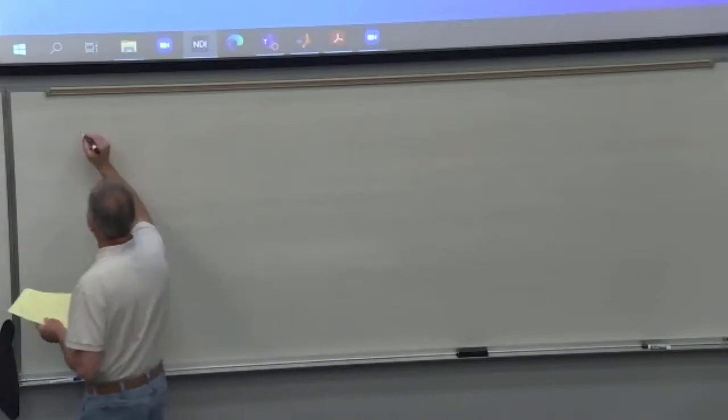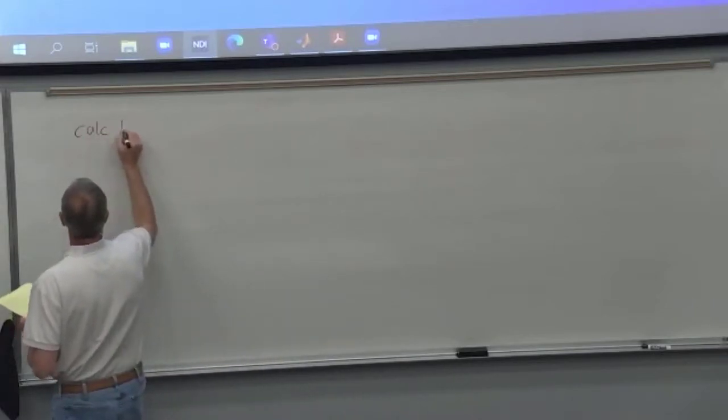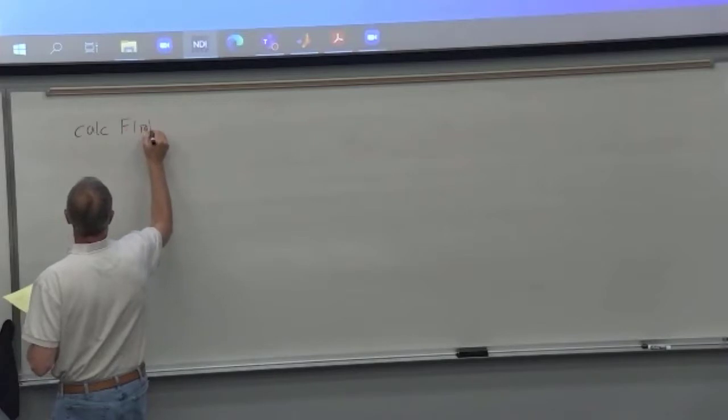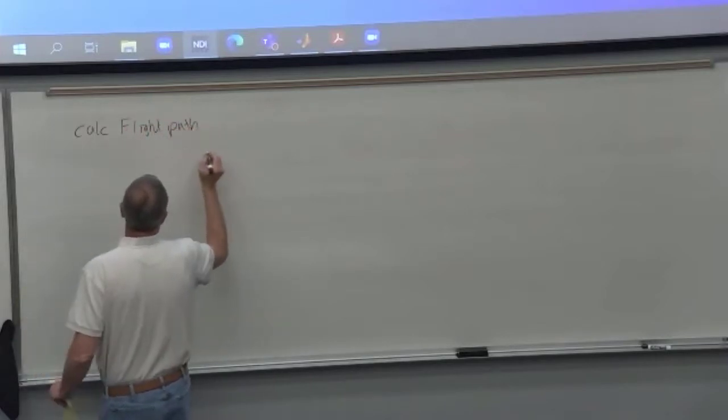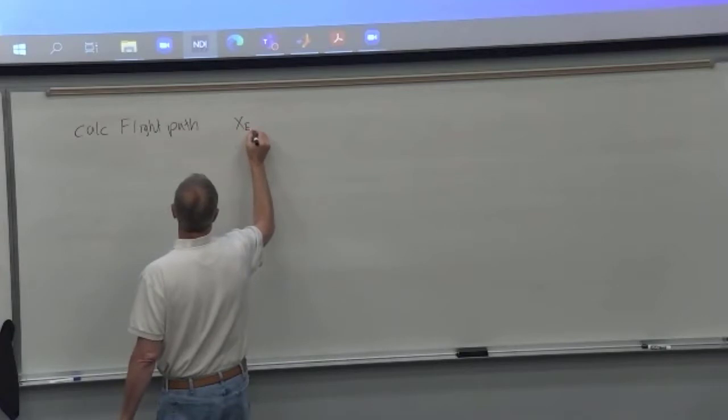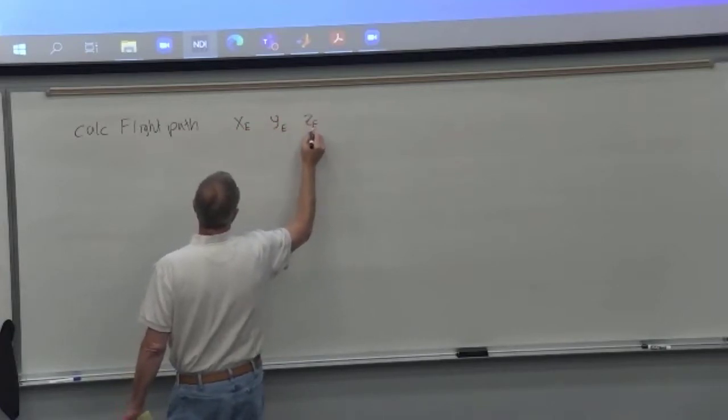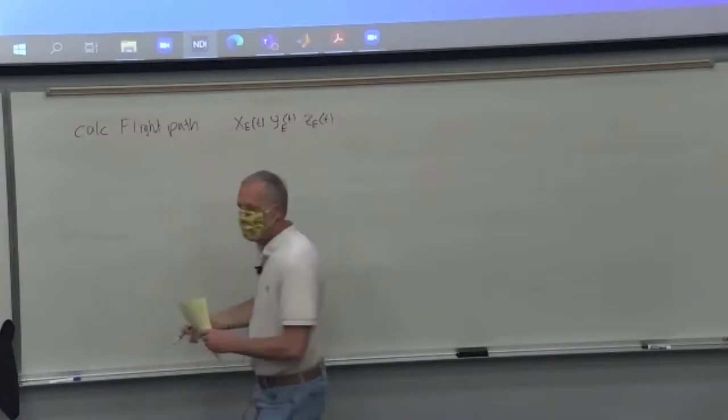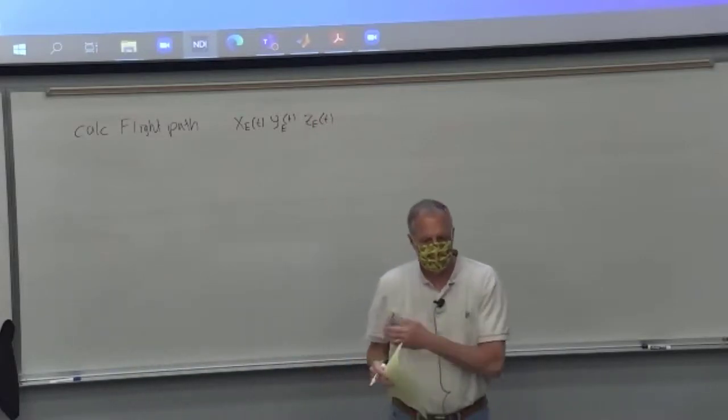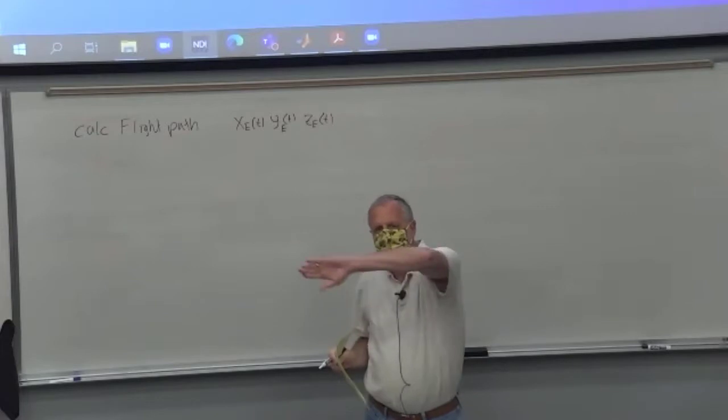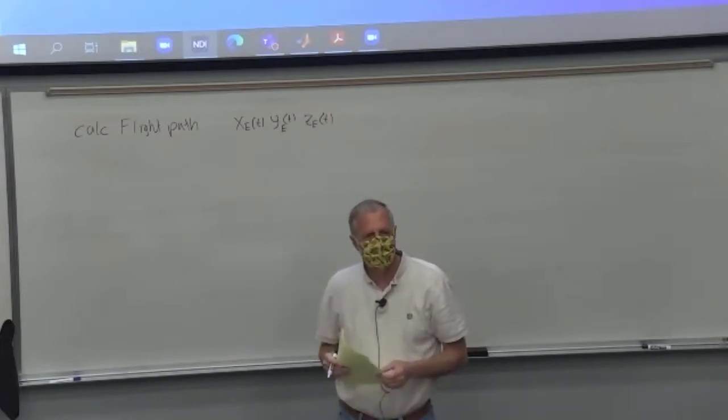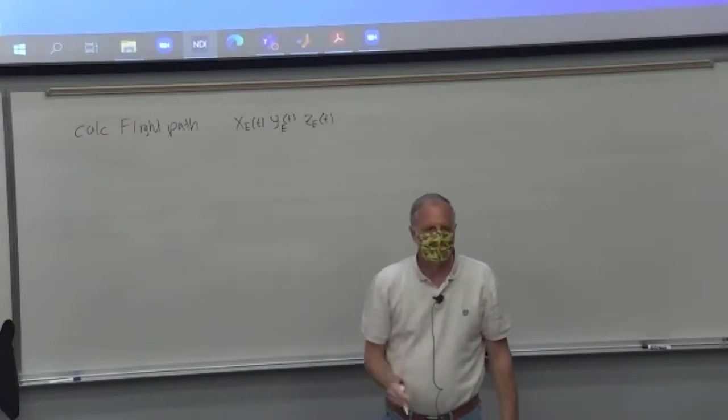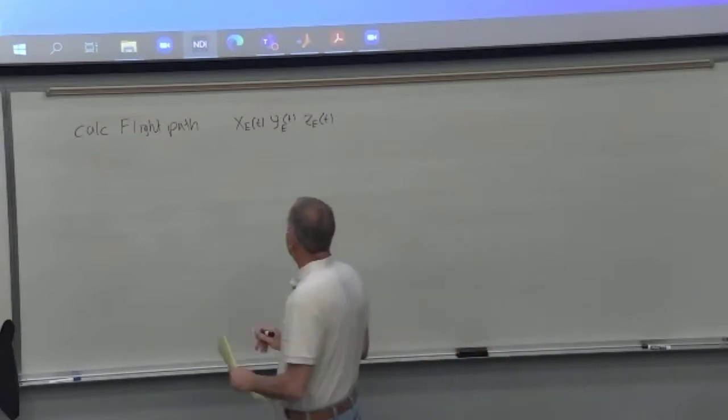Sometimes we'd like to calculate the flight path, meaning what the x, y, and z locations in the earth-fixed axis system as a function of time. Like we take off at Wichita, and the airplane rotates and climbs and banks and ends up for Denver. What is the x, y, z plot of the center of gravity of the flight path of the airplane?